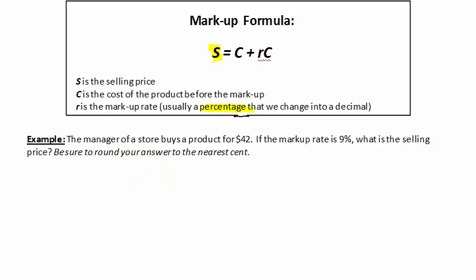Okay, so the first thing we should do is label our parameters. So it says, what is the selling price? Well, S is the selling price, so S we don't know. C is the cost of the product before the markup. So he bought the product for $42. So that would be C.